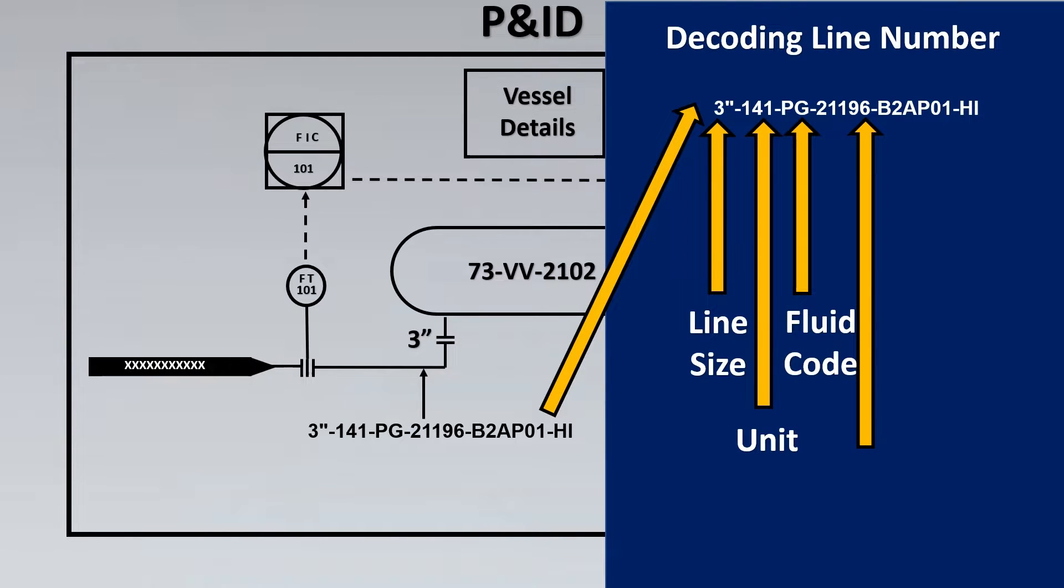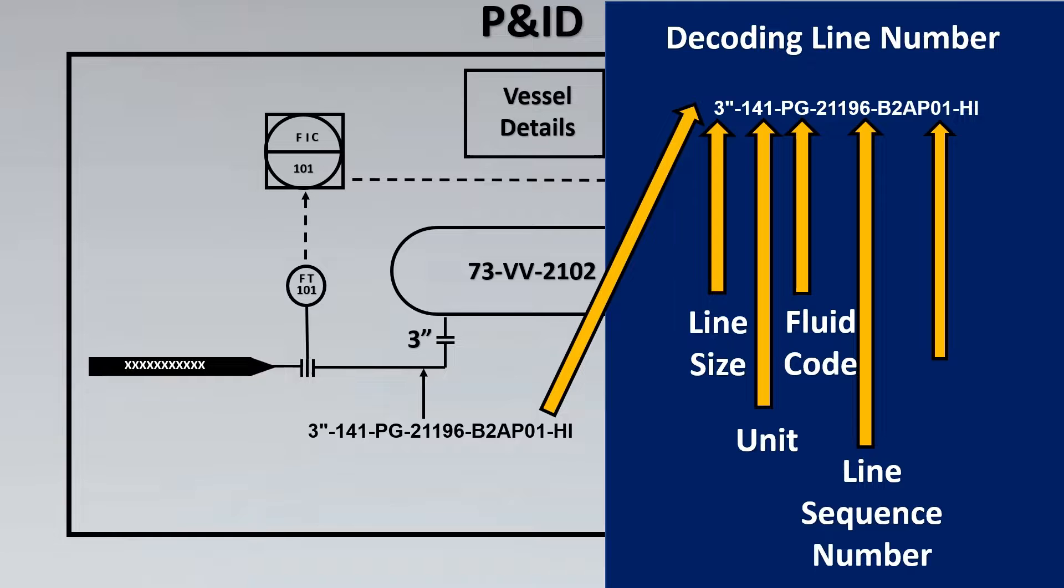This is like the tag number, a sequence number to the line because lines might be 10, 20, 50,000 lines in a plant. So you can understand very easily that as per this unique sequence you can identify the lines. Finally this is one of the extremely important thing which is called pipe specifications, and I would call in simple words DNA of the pipe. With this pipe specification you can search in the document called pipe specifications, and with this number you will find out what is the rating of the pipe, material of the pipe, corrosion allowance, what type of gasket you can use, what is the trim material of the valve, every single thing related to it. This is extremely important.